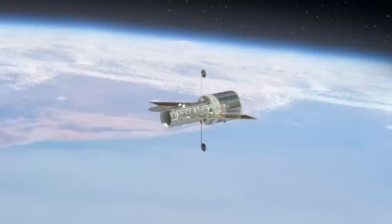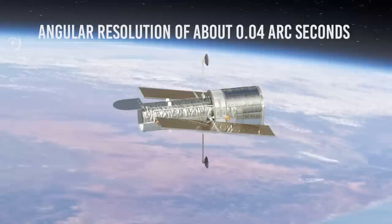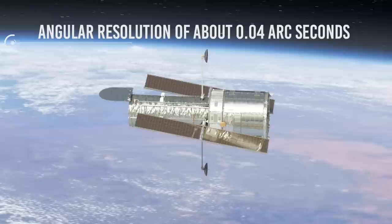In visible light, Hubble can achieve an angular resolution of about 0.04 arcseconds, a sharpness that would allow it to distinguish from Earth, for example, two lights 50 cm apart located on the Moon.